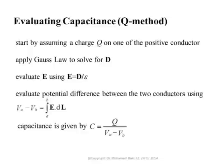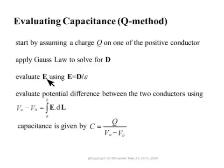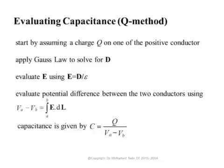Divide the total charge on the positive conductor by the voltage difference between the two electrodes to get the capacitance — this is the V method. The Q method starts differently: assume charge Q on the positive electrode and minus Q on the negative electrode, apply Gauss's law to solve for D, get E from D using E equals D over epsilon, integrate E dot dl from positive to negative electrode to get the voltage difference, then take the ratio Q over V. Both techniques should give the same result.